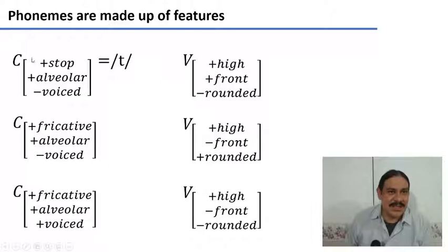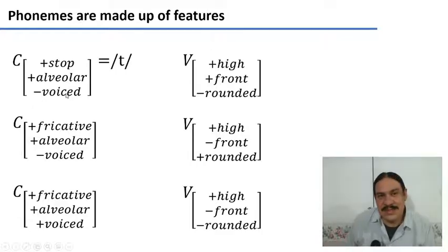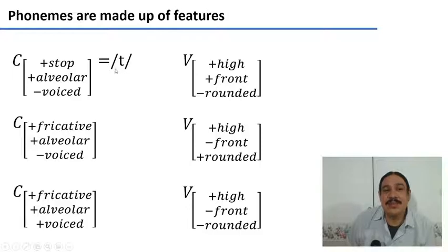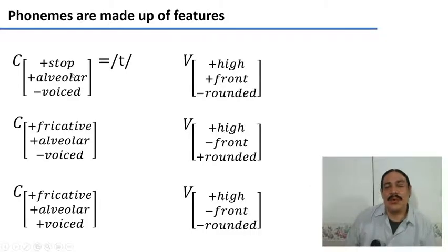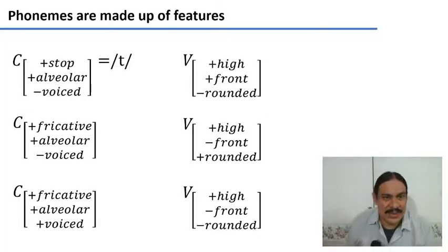Let's say we have a consonant — that's what the C means — a consonant that is [+stop], so it is a stop; [+alveolar], so it is an alveolar sound; and [−voiced], so it's a voiceless consonant. As we saw last week, a voiceless alveolar stop is essentially a T. So if a language has the phoneme T, it could be described as a consonant with these features. Each of these little snippets describes a phoneme and contrasts it to other phonemes, as we'll see in a moment.